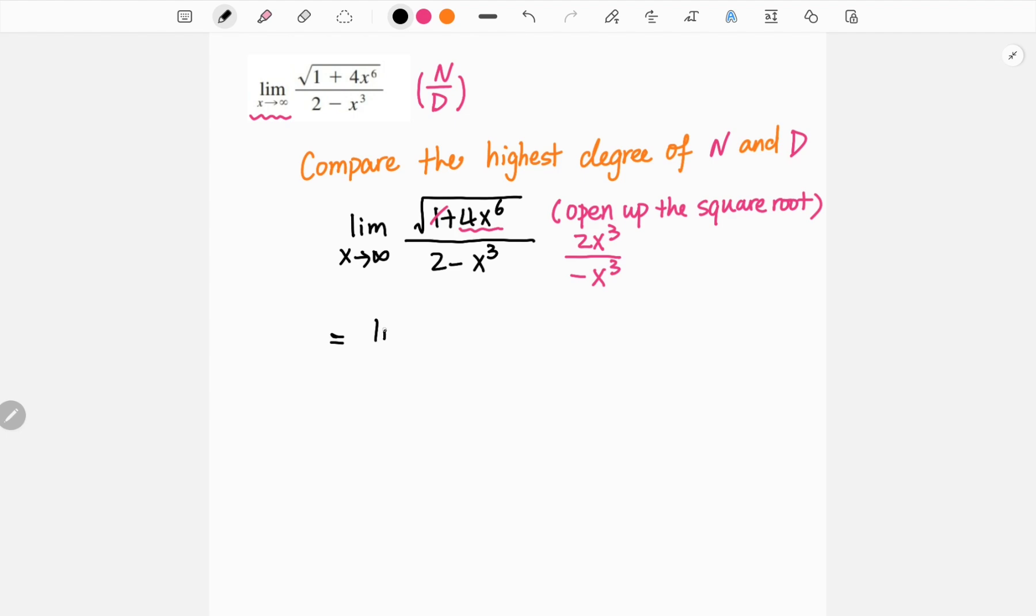So our limit becomes 2x³ over negative x³. This would be the result for our limit. In this case, what we have is the degree of numerator is the same as the denominator. So in that case, all we look at is the coefficient, which gives us negative 2.